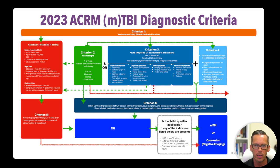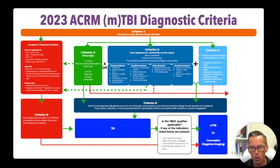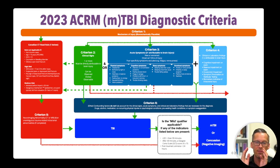Going back to criterion one — somebody had a biomechanically plausible mechanism of injury, and the green arrows fork into three sections. Criterion two can exist on its own or with criteria three and four. However, criterion three has to coexist with criterion four. You can't just have criterion three or criterion four alone. So you can have criterion two being positive and/or criterion three and four. If you don't have criterion two, you have to have criterion three and four together.